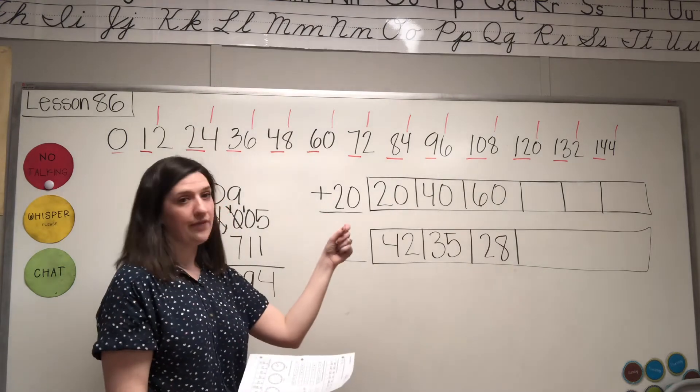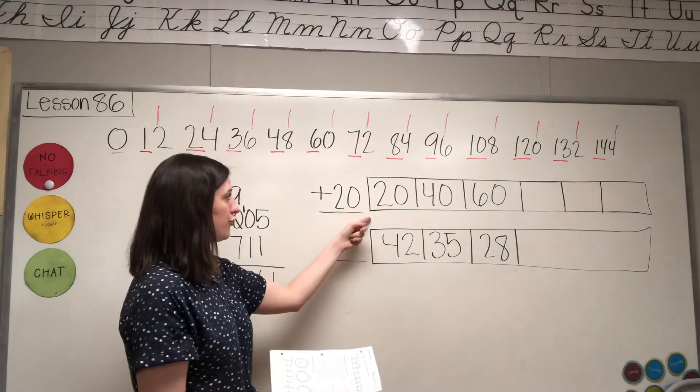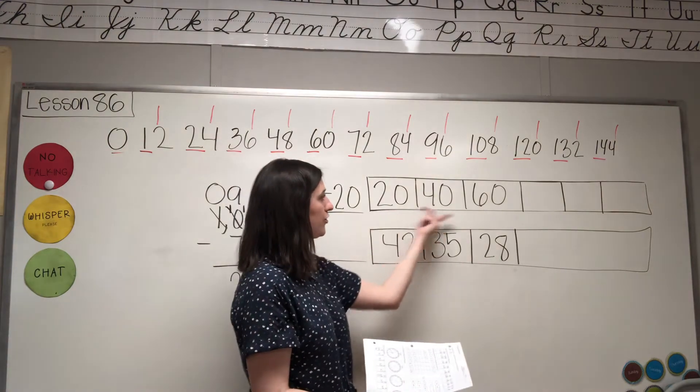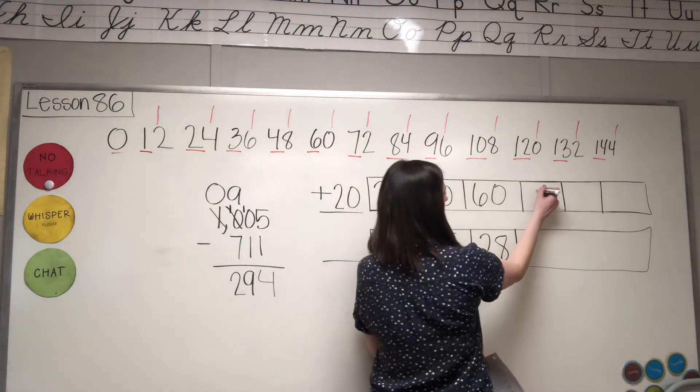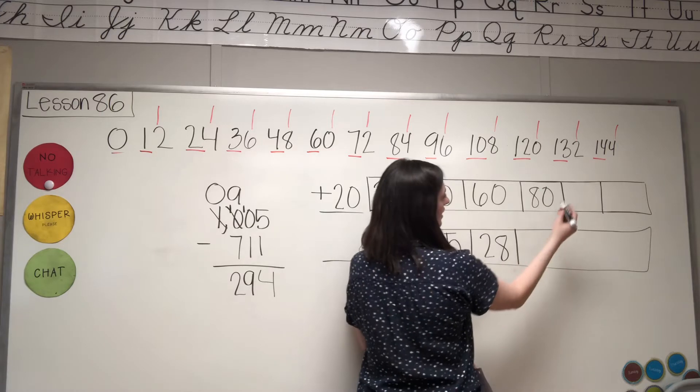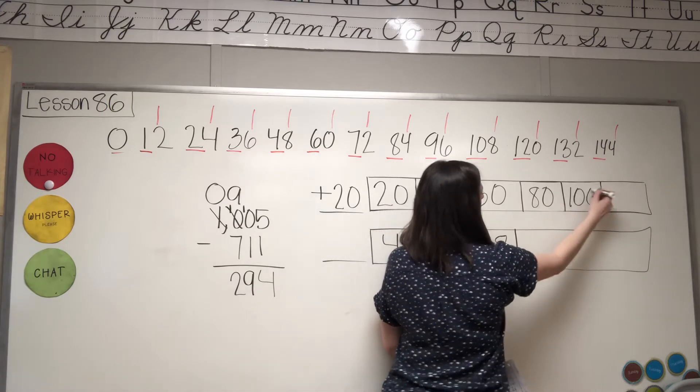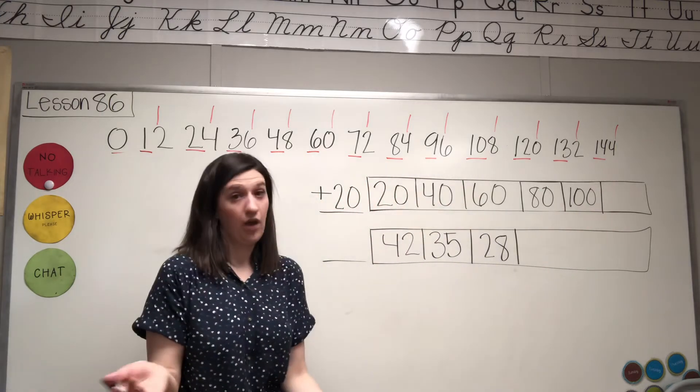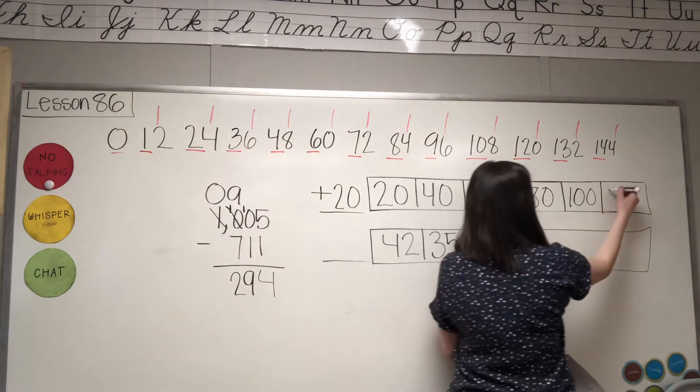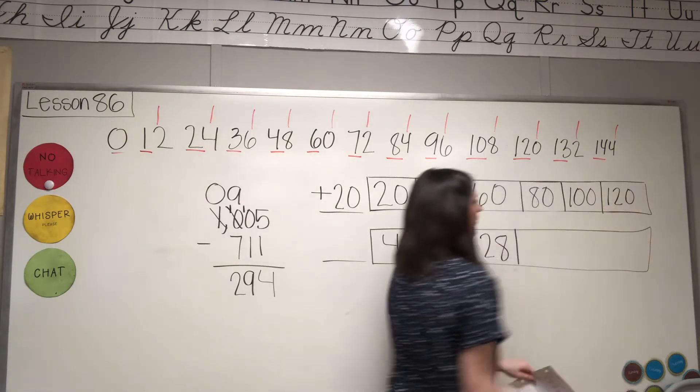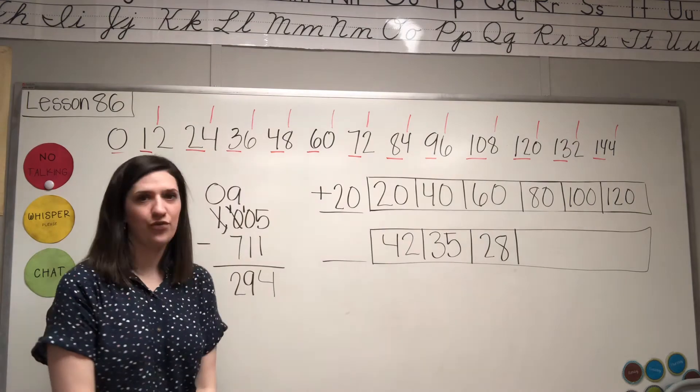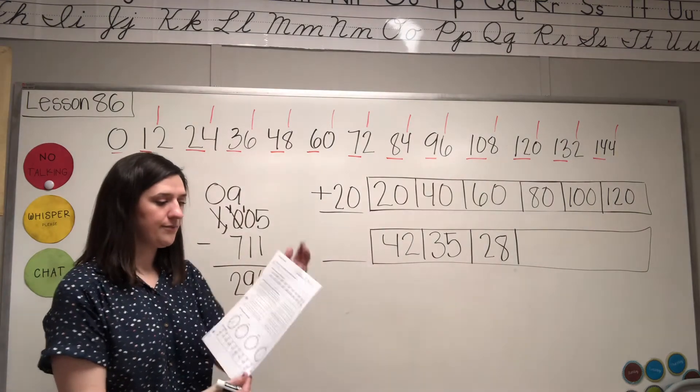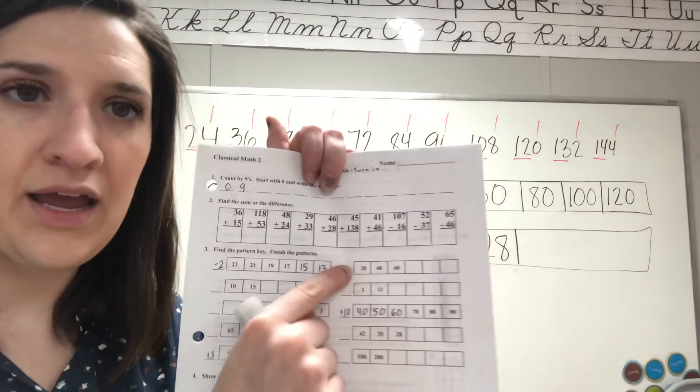So just get bigger by 2s and then stick a 0 in the ones place. So 2, 4, 6 becomes 20, 40, 60. Then an 8 with a 0 is 80, then a 10 with a 0 is 100, and then 12 with a 0 is 120. And that is the correct answer for this one right here.